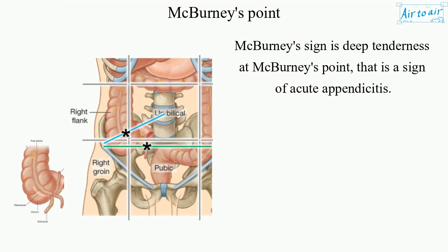McBurnie's sign is deep tenderness at McBurnie's point, and that is a sign of acute appendicitis.